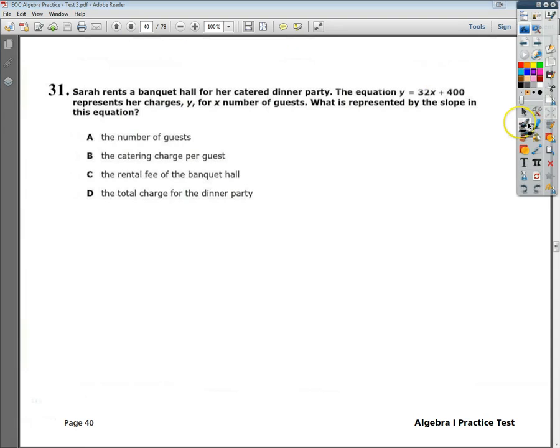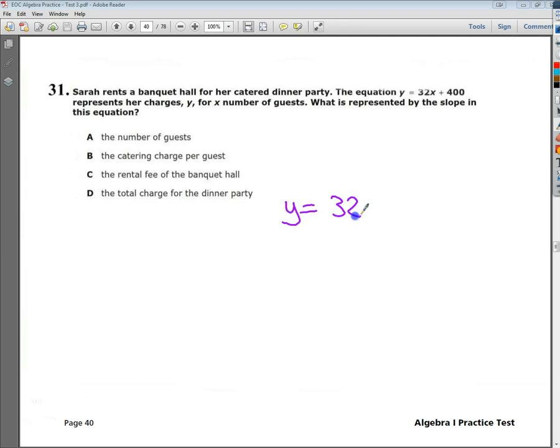Anyway, I'm going to write the formula down, and on the side, over on the left, I'm going to keep a little list of what everything means. Y represents her charges, her cost. That's a nice way of saying how much she owes. X is number of guests.